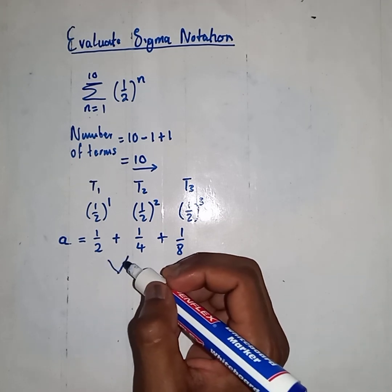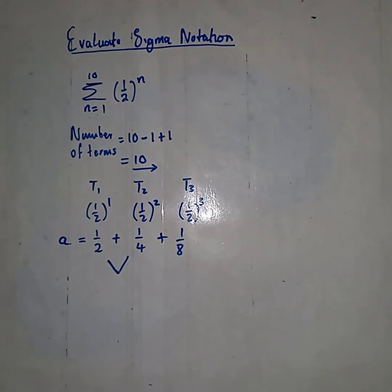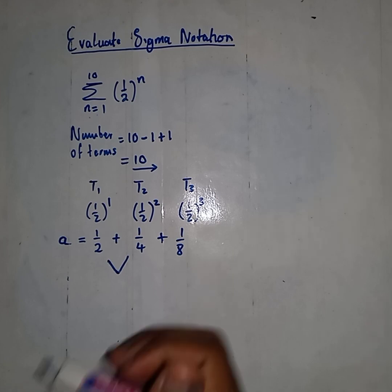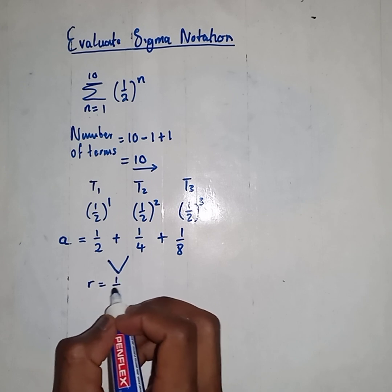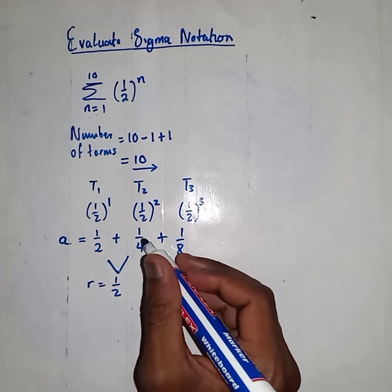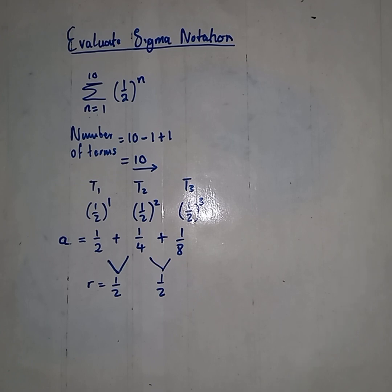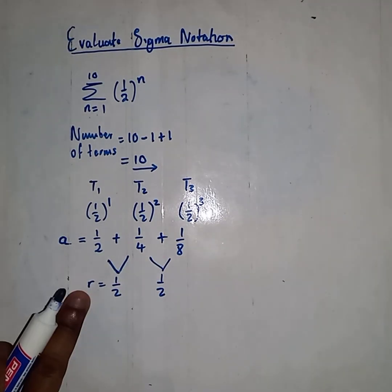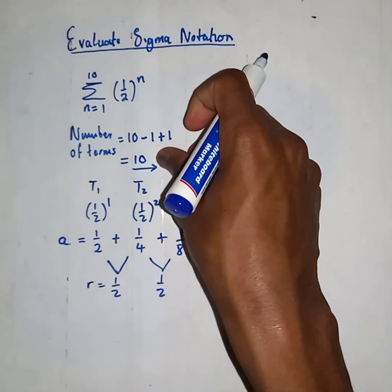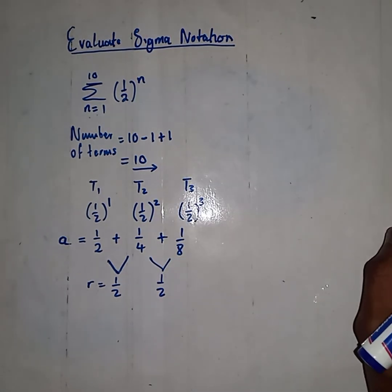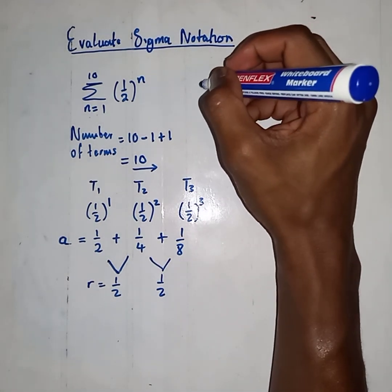For us to figure out the value of R, we say 1/4 divided by 1/2 — you get 1/2. Same if you take 1/8 divided by 1/4 — you get 1/2, which is your R value. We have R value and A value. Do we know the formula to calculate the sum of a geometric? Yes, we do.